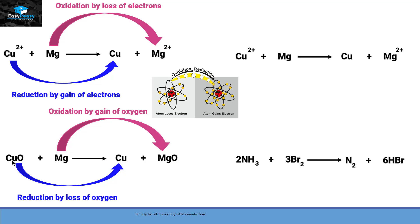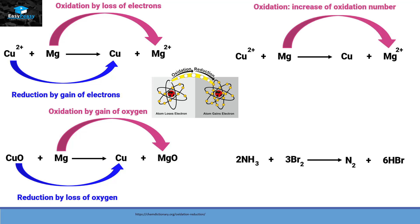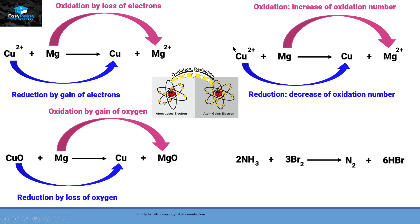The third criteria is based on oxidation number. In this reaction, magnesium has no charge on the reactant side, but on the product side it has a +2 charge, so the oxidation number increases — that's why magnesium is oxidized. On the other hand, copper had a +2 charge on the reactant side but no charge on the product side, so its oxidation number decreases, confirming it is a reduction reaction.